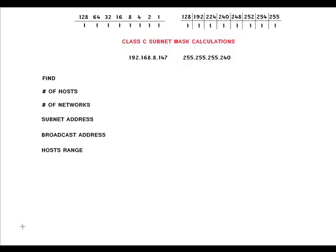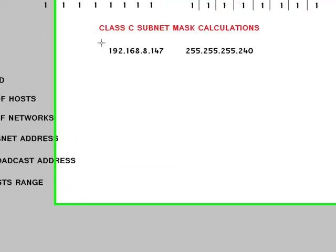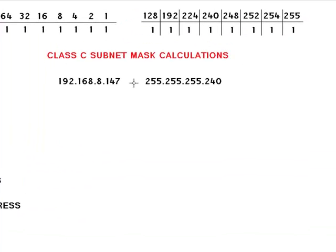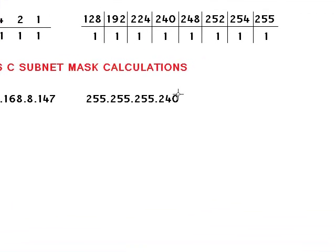In this video I'm going to show you how to do class C subnet mask calculations. I picked an IP address of 182.168.8.147 with a mask of 240 and I'll show you how to find number of hosts, number of networks, subnet address, broadcast address and the host range. We're going to do everything in binary so we don't have to memorize a lot of stuff.